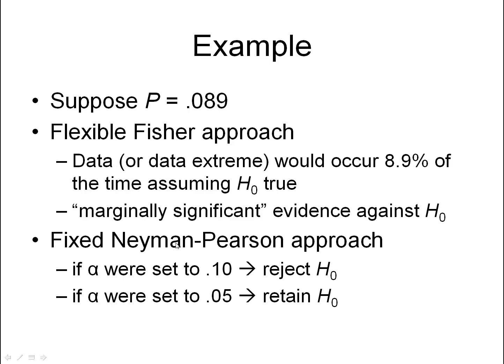So for example, suppose we do an analysis to derive a p-value of 0.089. The flexible Fisher approach would say that data or data more extreme would occur 8.9% of the time if the null hypothesis were true. Adopting the language I presented in the earlier slide, we'd say this is marginally significant evidence against the null hypothesis.